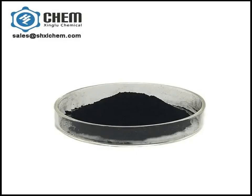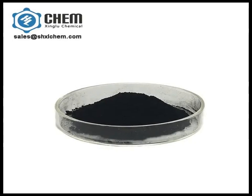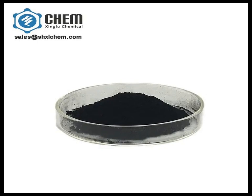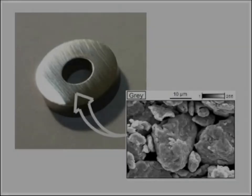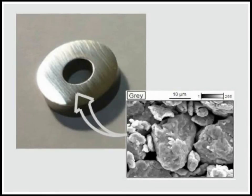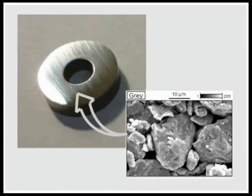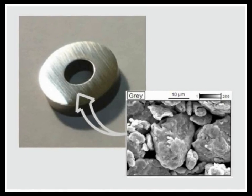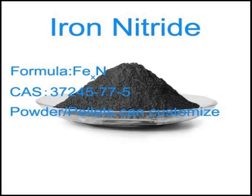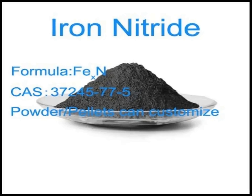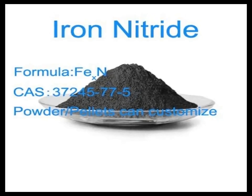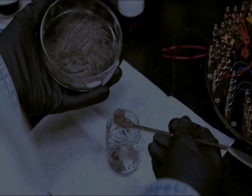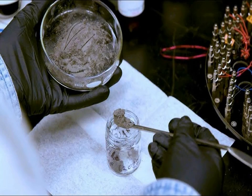Iron nitrides exhibit a range of stoichiometries and crystallographic structures depending on the nitrogen content and synthesis conditions. The most well-known phases include Fe-2N, Fe-3N, Fe-4N, and epsilon-Fe-3N, each with distinct structural and magnetic characteristics. These phases can be metastable or stable depending on temperature, pressure, and nitrogen partial pressure, which plays a crucial role in determining their formation and stability.